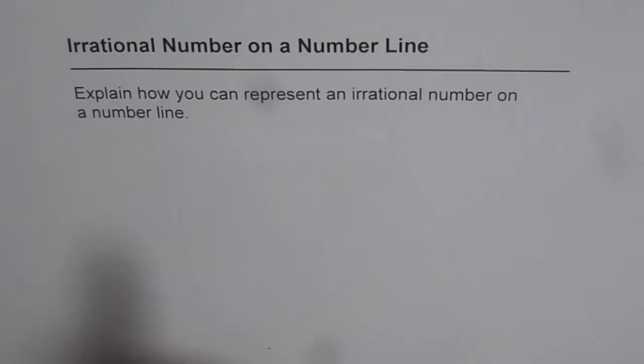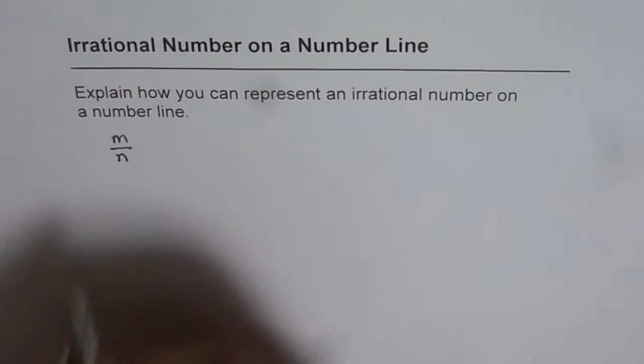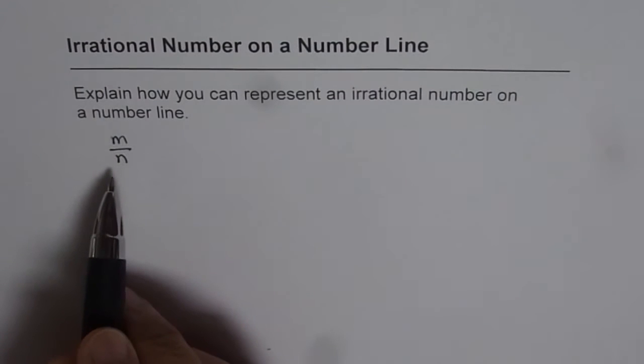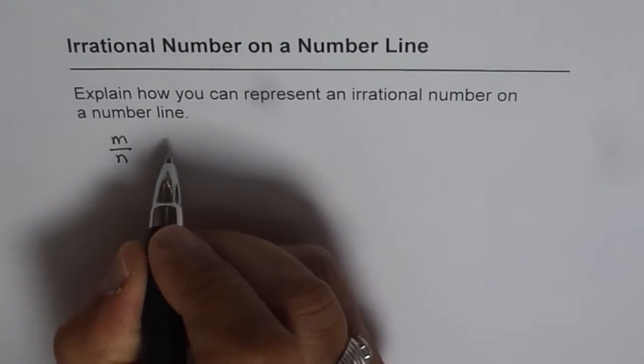Irrational numbers means numbers which cannot be written as a rational number, that is to say that a number which cannot be written in the form of m over n, it is kind of a fraction. So if you cannot write a number in the form of m over n, it is called irrational number.